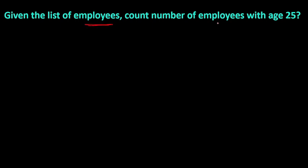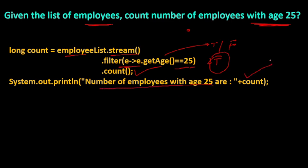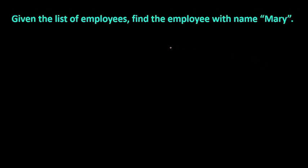The next question: given a list of employees, count the number of employees with age 25. In the previous question we filtered for age greater than 25; here we need to count. We put a stream on the list, filter where age equals 25 — the filter returns true or false for each element — and then we call count() at the end to print the result.